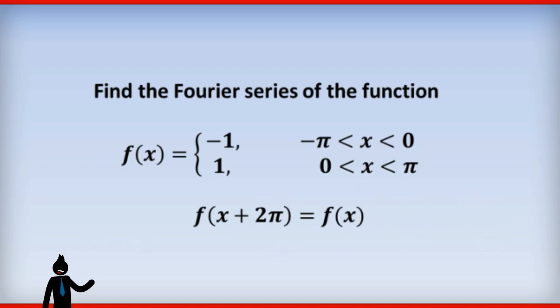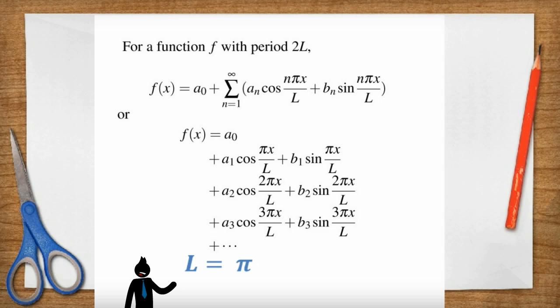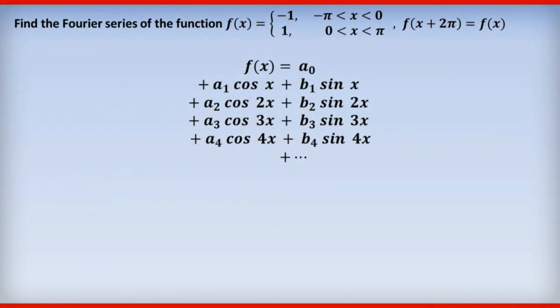So here's the generalized Fourier series formula that we had up before, but we now know that L equals π. So let's go ahead and put L equals π into that. And so now we have a Fourier series for the specific situation where the function has period of 2π.